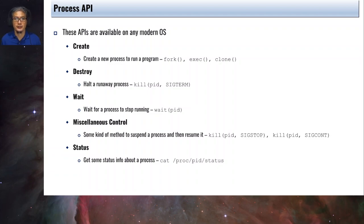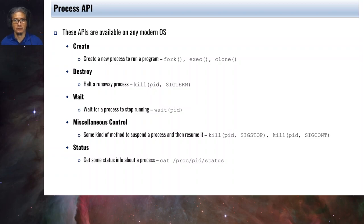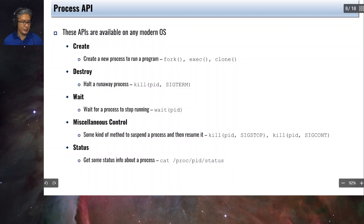Given that we now understand the concept of a process and the machine state that characterizes it, let's look at the API — the application programming interface — related to processes. An operating system should provide syscalls that allow a user to manipulate processes. These categories of APIs are typically functions for creating a process, destroying a process, waiting for a process to finish, miscellaneous control, and status.